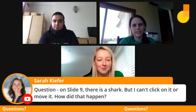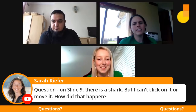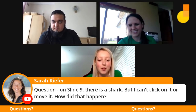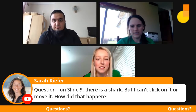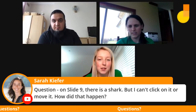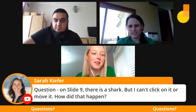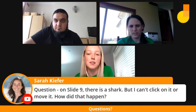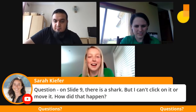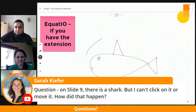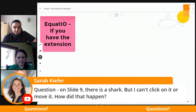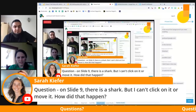On slide nine, someone's asking about that shark drawing — is there a way to click on the whole thing and move it? If you're in the Jamboard app and you use the move arrow, you can go around and select that drawn content. Then you can resize the shark and move it to wherever you want it to appear. So yes, if you're using the Jamboard app, that is possible.